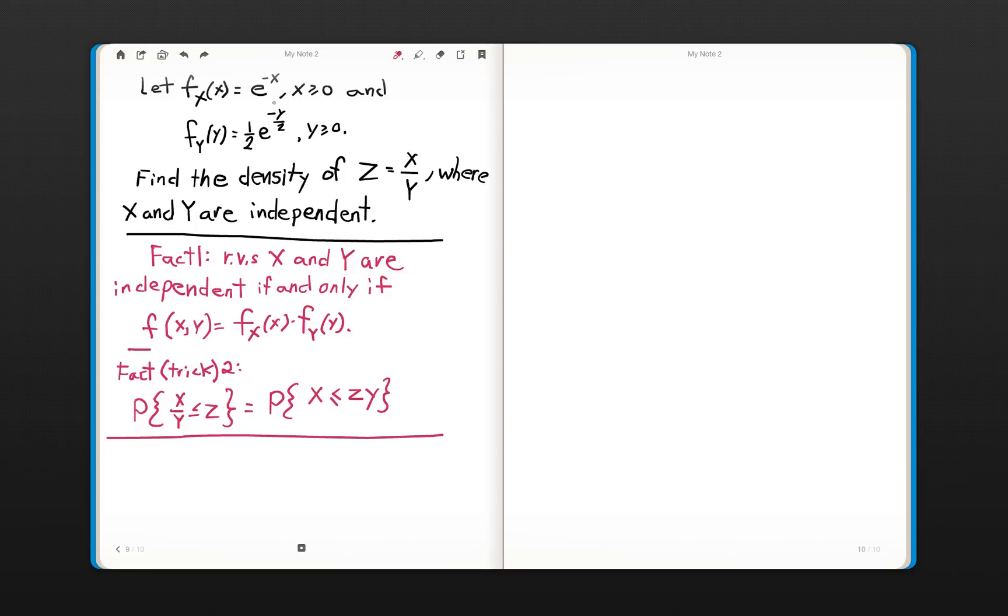We'll begin with two densities. Random variable X distributes an exponential random variable with rate 1, and another random variable Y with rate 1/2. So this is an exponential random variable, this top one X, with mean 1, and this random variable here, Y, has mean 2.